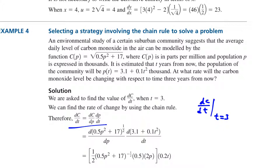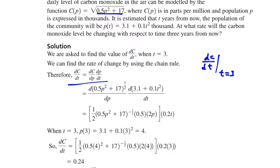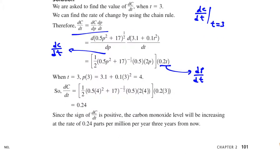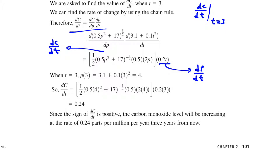We find the derivative of C with respect to P. The derivative is 1 over 2 times (0.5p² plus 17) to the power of negative 1 over 2, times the derivative of the inner expression, which is P. dP/dt is 0.2 times t. We substitute these into the chain rule expression for dC/dt. We are looking for dC/dt when t equals 3; when t is 3, P is 4. By plugging in the numbers, we find dC/dt at t equals 3, which is 0.24. The unit is parts per million per year.